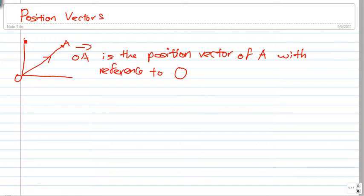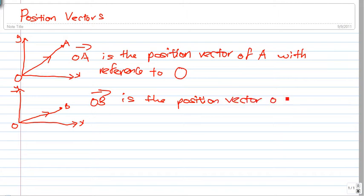I forgot to label the y and the x-axis here. Say if you have the y and the x-axis here again, and you know that B is the point here. Now this is the origin. We say that OB is the position vector of B with reference to O, the origin.